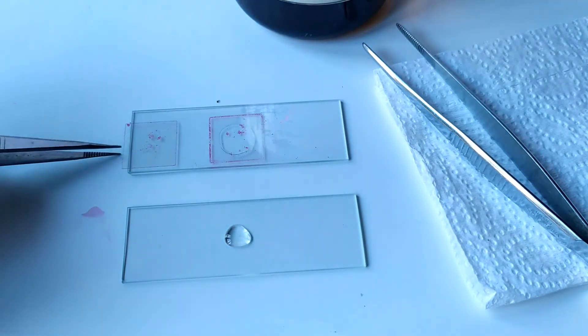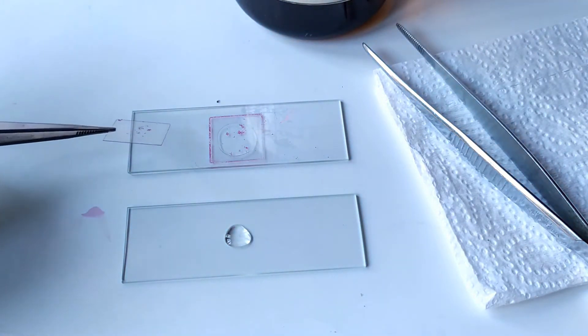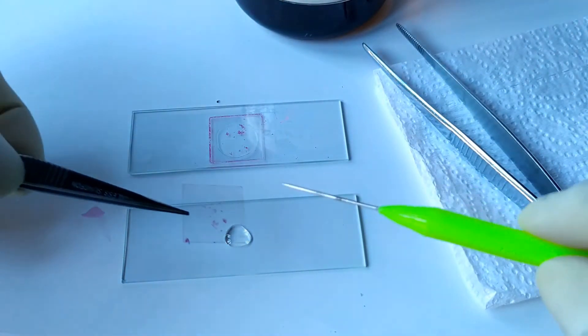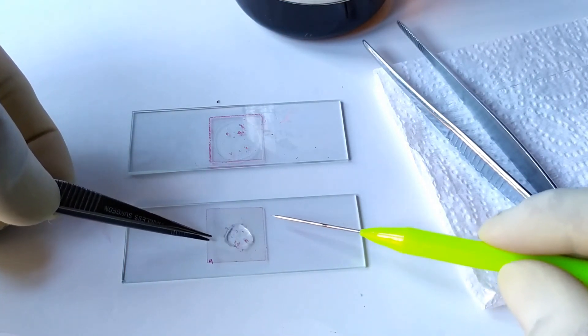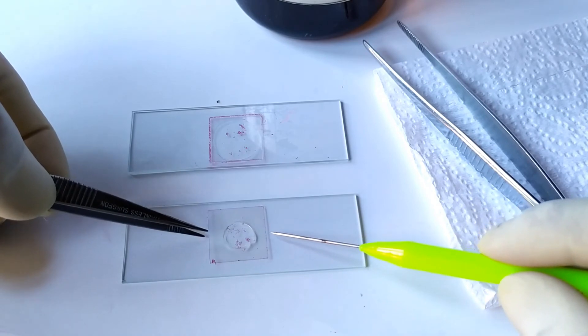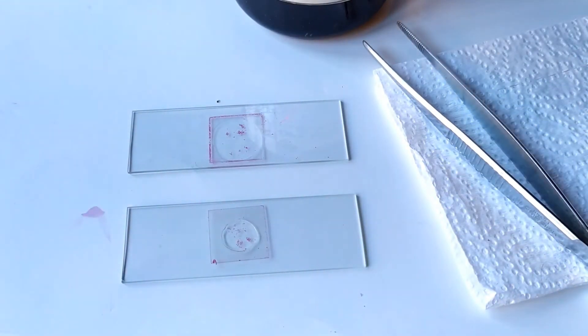Next, hold the cover slip containing the cell materials using a forcep. Turn it upside down such that the surface containing the material now comes on the lower side. Then carefully place this cover slip onto the mounting medium contained in the fresh glass slide, making sure to avoid the trapping of any air bubbles.